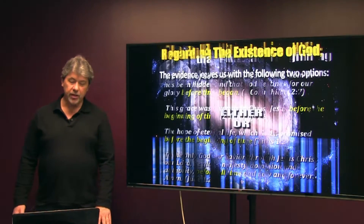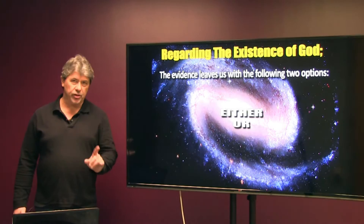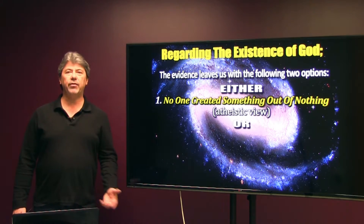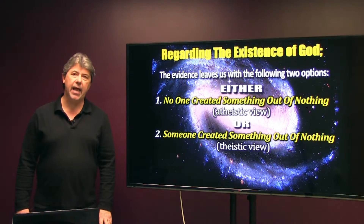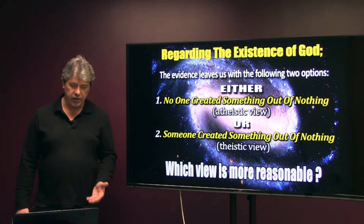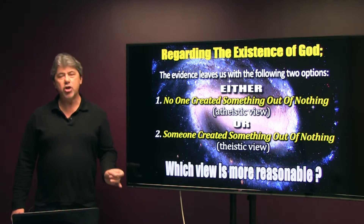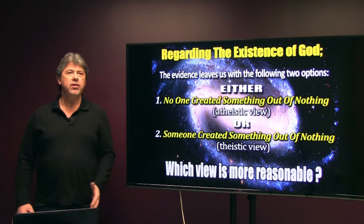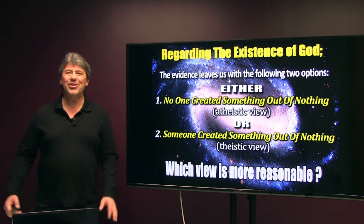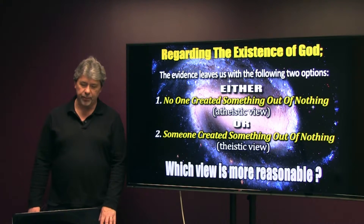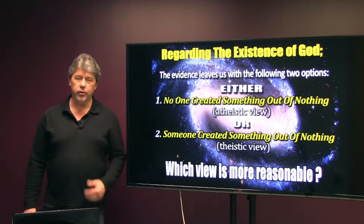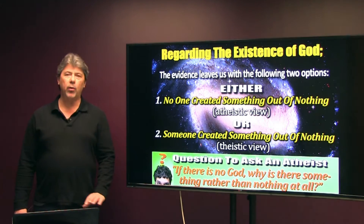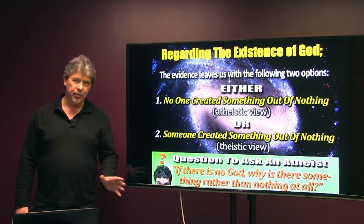Regarding the existence of God, the evidence leaves us with only two options: either no one created something out of nothing — the atheistic view — or someone created something out of nothing — the theistic view. The most reasonable conclusion is that someone created something out of nothing, and that someone is God. Nothing comes out of nothing — that doesn't work. A question you can ask an atheist: if there is no God, why is there something rather than nothing at all?